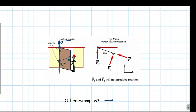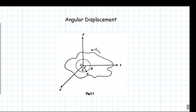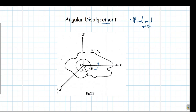Now let us define some key physical terms related to rotational movement. The first is angular displacement. Just like linear displacement, angular displacement is the displacement corresponding to rotational motion. Since points are moving in circular paths, they move through angles. All the points inside the rigid body move through angles, which is why we define angular displacement for rigid bodies undergoing rotational motion.